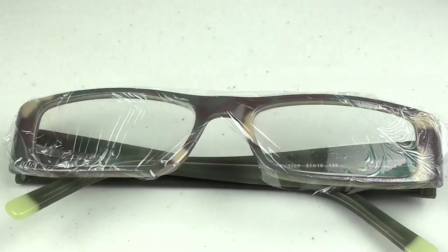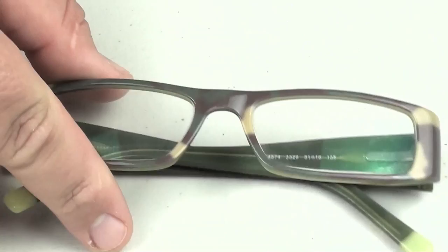Once the job is done, simply remove the cling wrap from the front of the glasses, and they remain perfectly clean from any paint or chemicals.